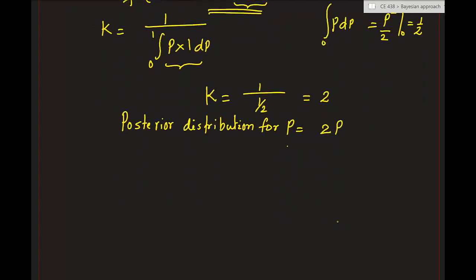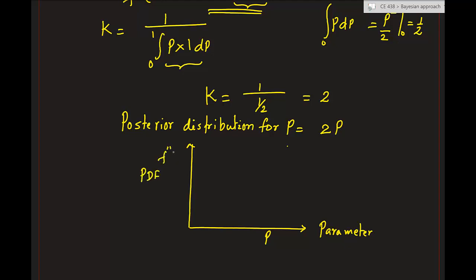Plotting the posterior distribution: on the x-axis we have parameter P, and on the y-axis we have the PDF f''(P). The posterior is 2P — a linearly varying distribution. Initially we had a uniform prior, and after observing one defective pile, we now have a linearly increasing posterior.